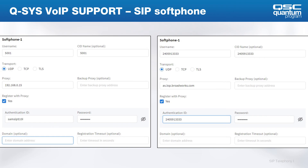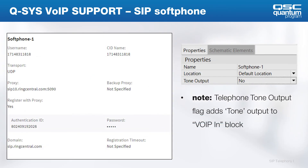Different systems use the authentication ID differently — sometimes the username equals the authentication ID, but not in Cisco Call Manager. This is an example of a softphone using a hosted solution where a domain was required by the provider. Domain is optional and not needed for Call Manager or many others, but occasionally you'll need it — the only way to know is to ask the provider.